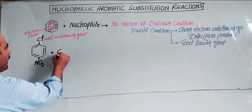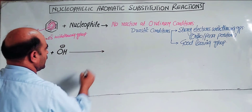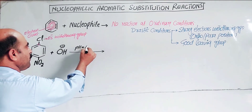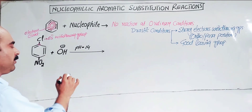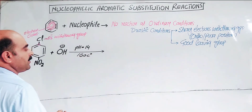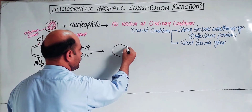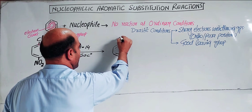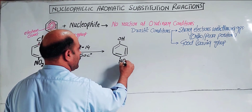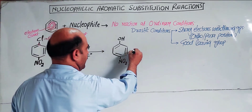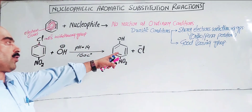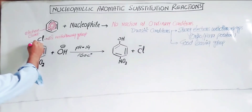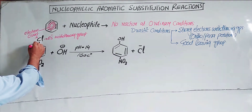Let's say the nucleophile is hydroxide (OH⁻). Under drastic conditions — pH equal to 14, high concentration of strong nucleophile, temperature of 160°C — the reaction can proceed. In chlorobenzene, the chlorine is replaced by the OH group, and the chloride ion is eliminated as the leaving group, with respect to the carbon it was bonded to.